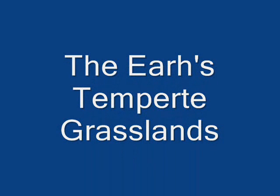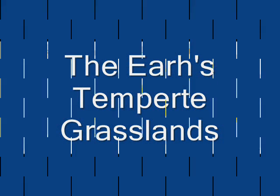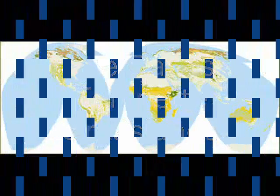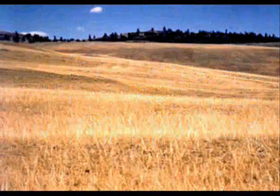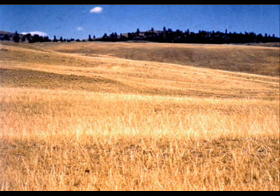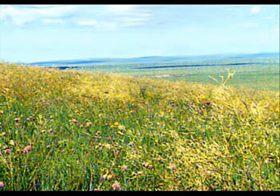The Earth's Temperate Grasslands. Grasslands are large communities covered with grasses and similar small plants. They are commonly known as prairies. Prairies are generally humid and are heavily covered in tall grass. There are a few trees in the grasslands because they are found usually on hill slopes or near humid springs.